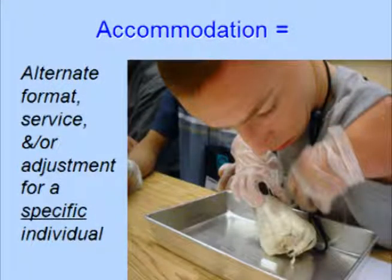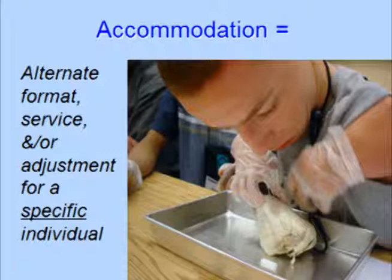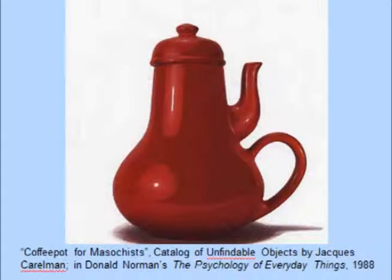What is an accommodation? It is some kind of alternative format, service, or other adjustment for a specific individual — a change made for one person who cannot access the environment or use the product without that adjustment. But sometimes it's clear that the environment or product itself needs to be modified. This picture of a coffee pot with a spout and handle on the same side is an obvious example of a flawed product.